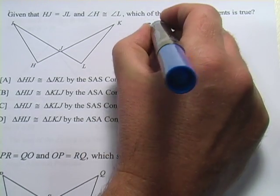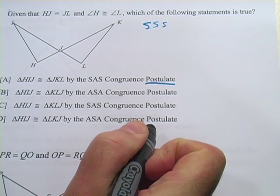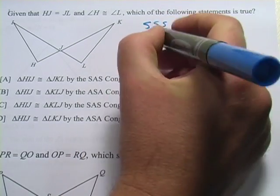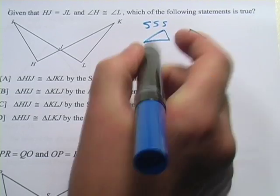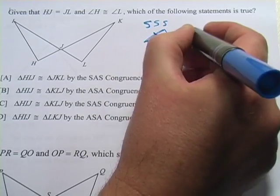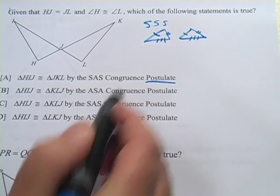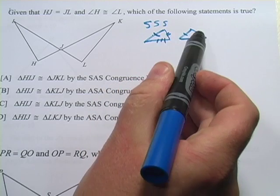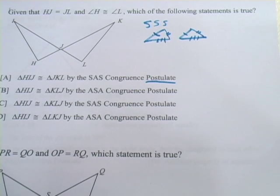One of them is called the side-side-side congruence postulate. What that basically says is if you have two triangles and their corresponding sides are each the same — this side is the same as this side, this side the same as that side, this side the same as that side — then the two triangles are congruent, and all their angles are going to be the same as well.